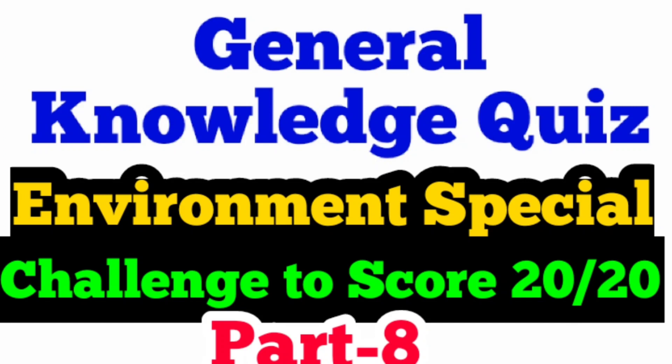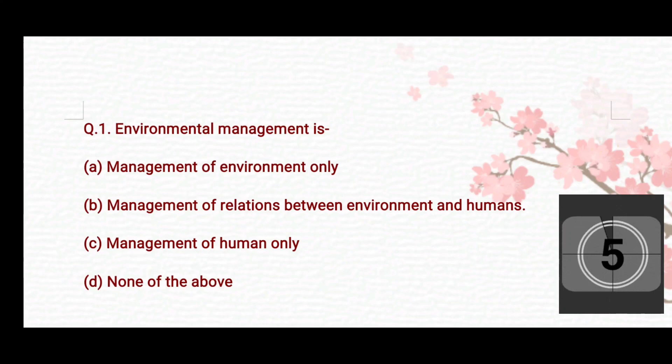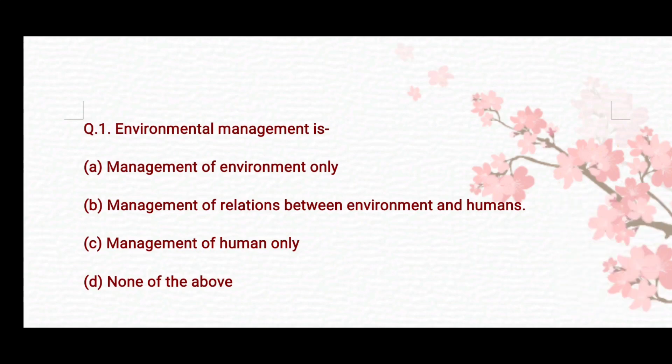First question: what is environmental management? Option A: management of environment only. Option B: management of relation between environment and humans. Option C: management of humans only. Option D: none of the above. The right answer is Option B — management of relations between environment and humans.